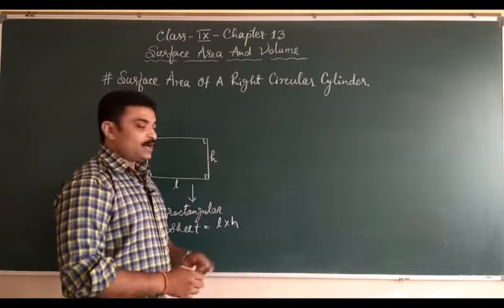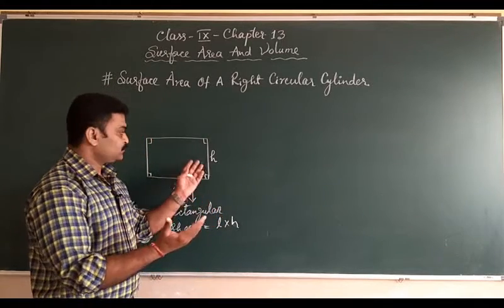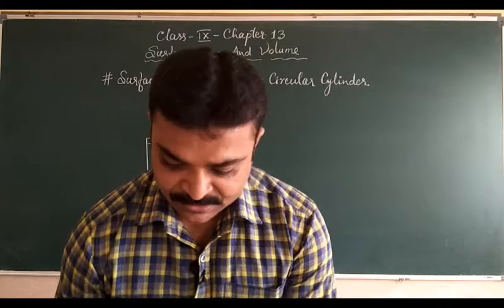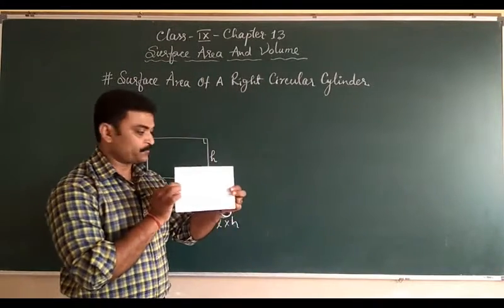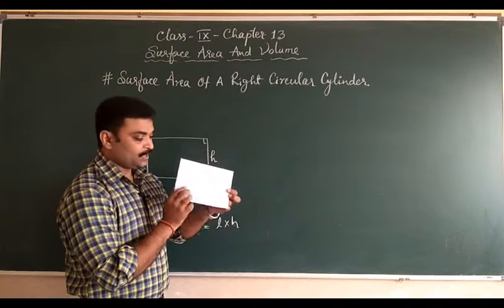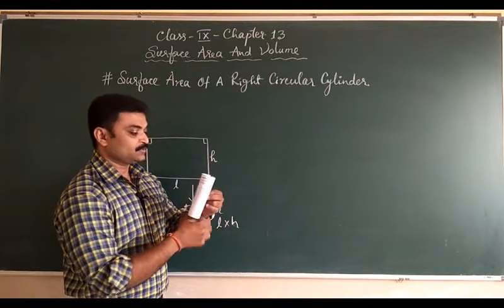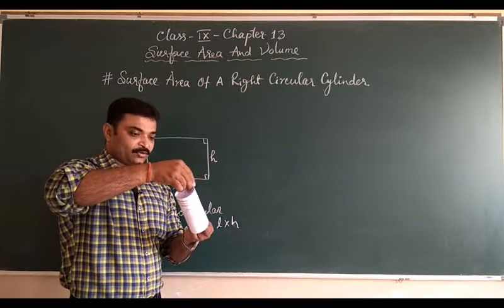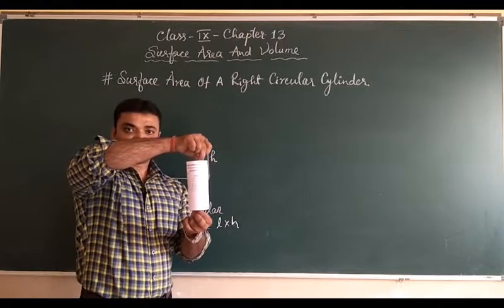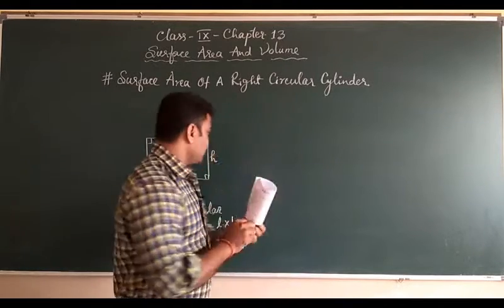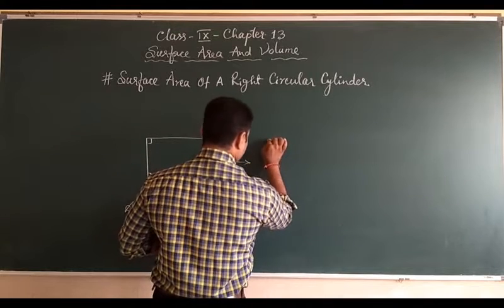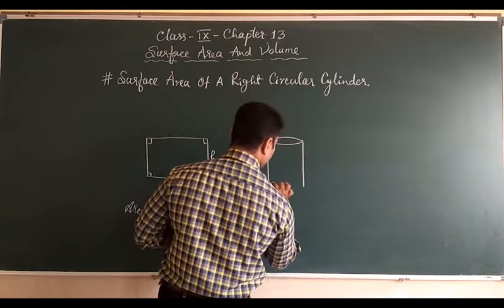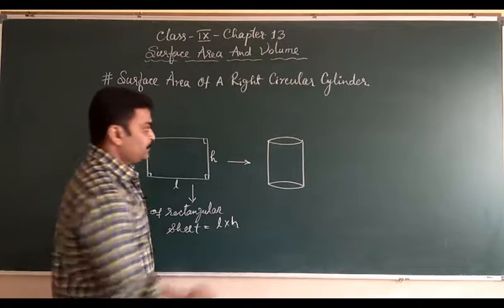Now suppose I am curving this paper. This is a rectangular piece of paper — it has length and height. I am revolving it according to its length. So what shape do I get? I get this shape. If I am drawing this shape, we will find this shape.